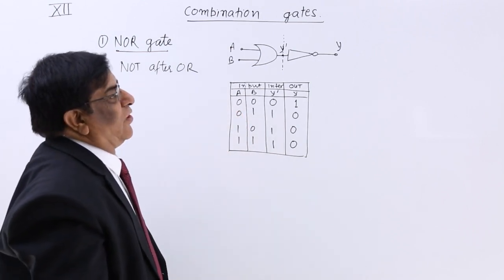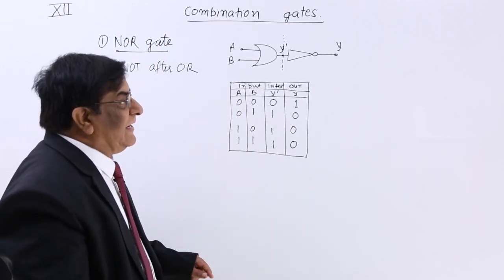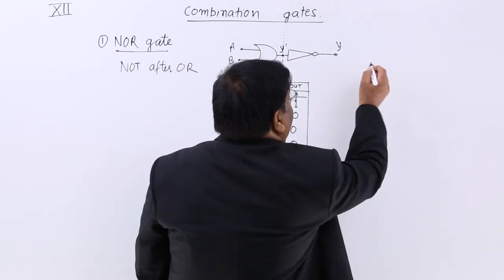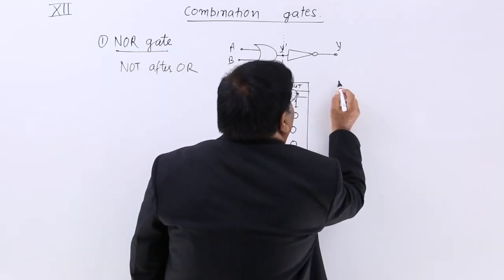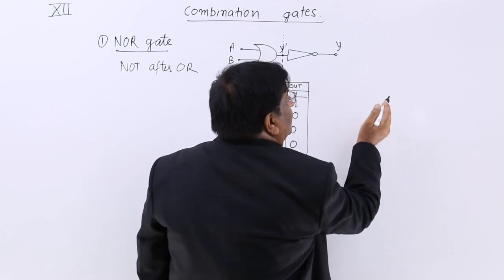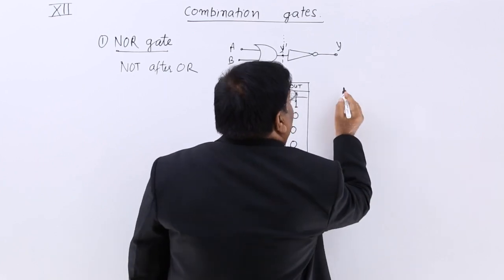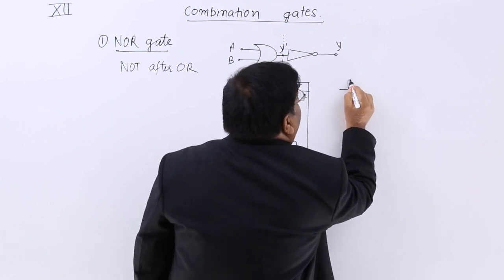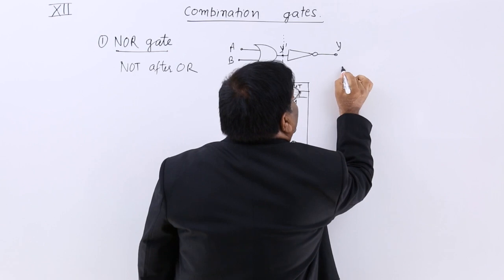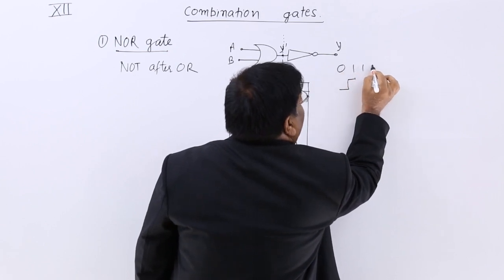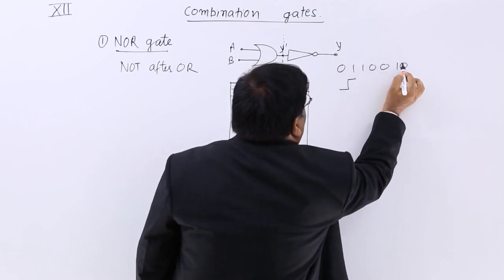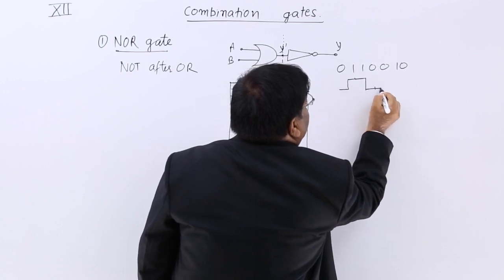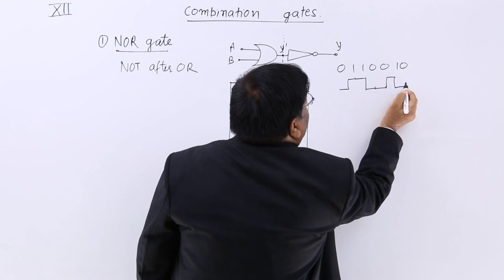This is the NOR gate. Now, as in the previous lesson, there is a wave or electric current — box current — with digits representing input A: 0, 1, 1, 0, 0, 1, 0.